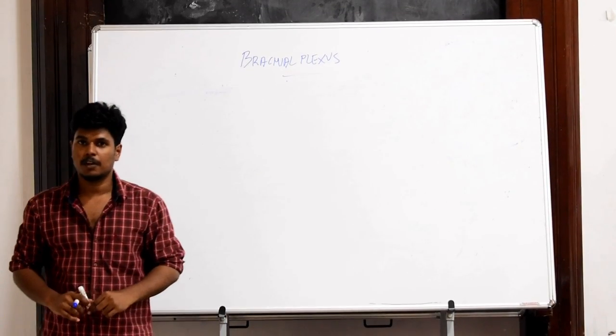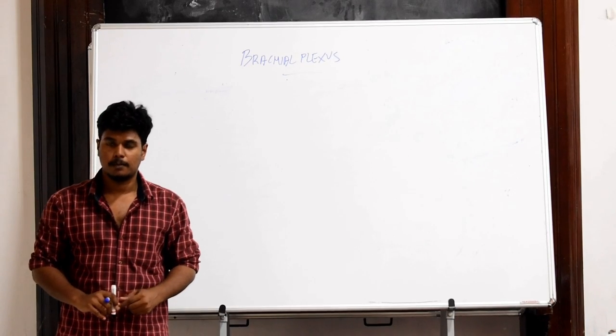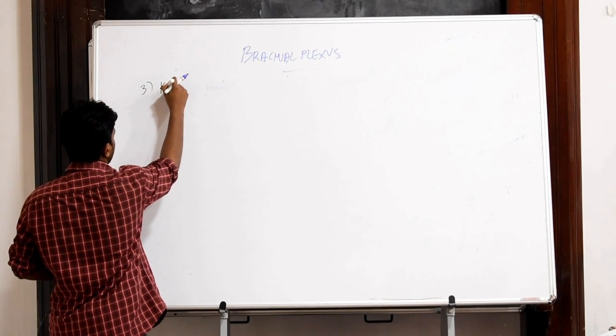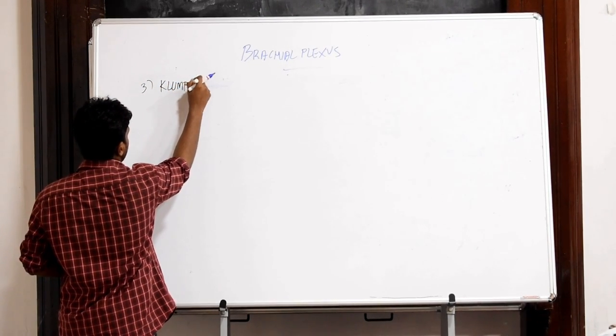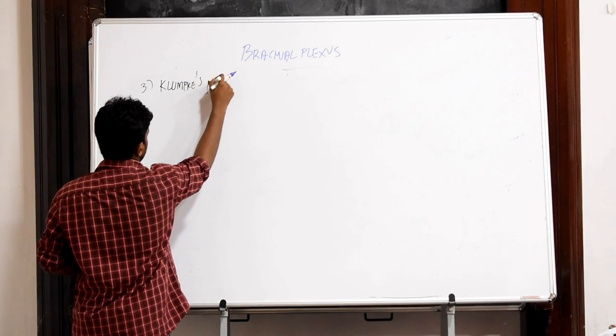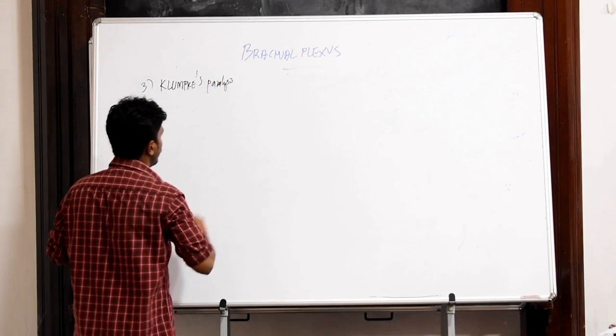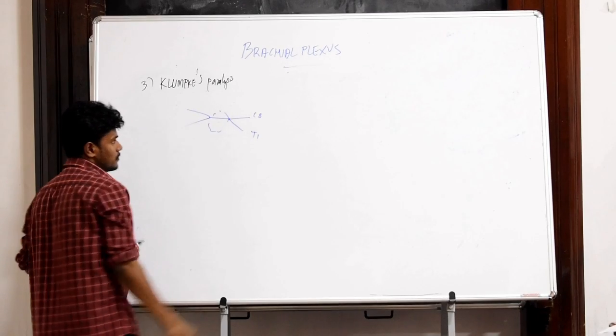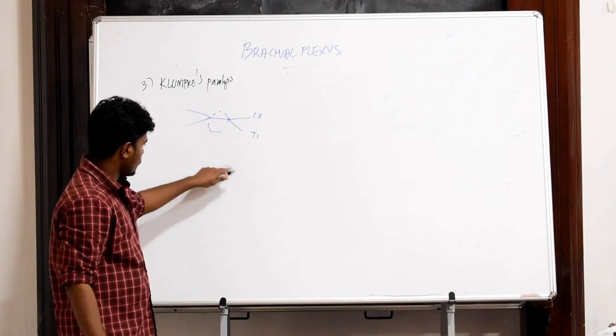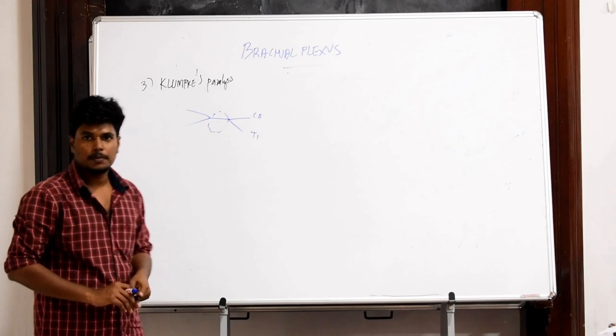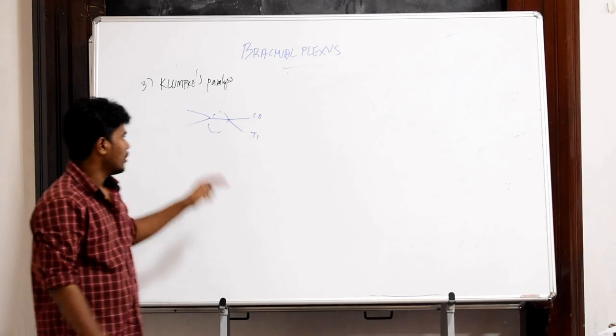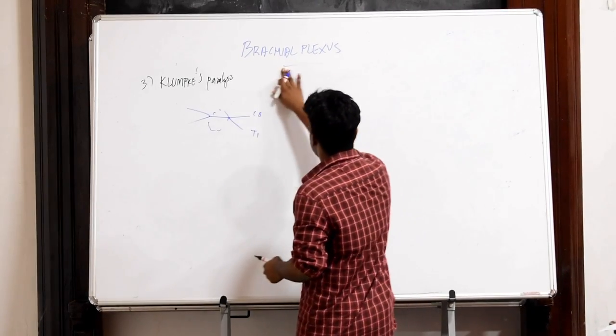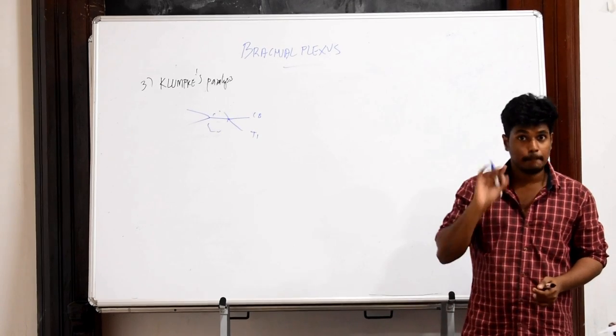Suppose what will happen if there is injury to the lower trunk of brachial plexus by a fall from a height or the presence of a cervical rib. Then we will come across a condition known as Klumpke's paralysis where the lower trunk formed from C8 and T1 get paralyzed. The typical clinical feature in Klumpke's paralysis is a complete claw hand.